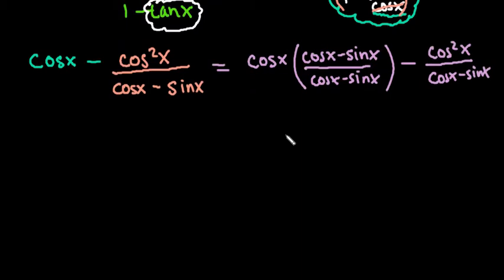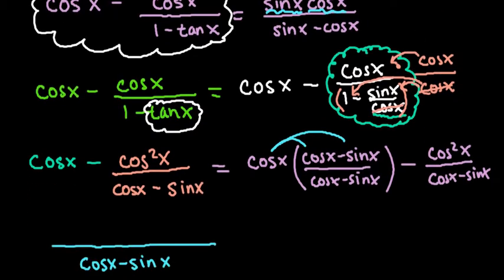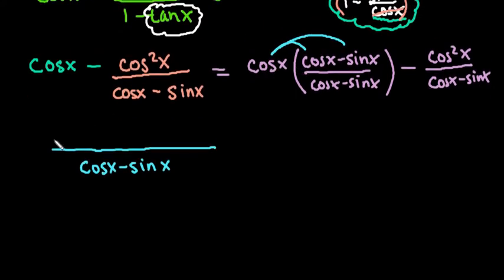So now what we are going to do is I'm going to just write this all as one fraction where I have cosine x minus sine x in the denominator. And so I'm going to distribute the cosine in. And I'm going to look back at my original problem because remember my goal is to get sine x times cosine x in the numerator. So when I multiply this in, it gives me positive cosine squared x minus sine x cosine x. And then remember I have this minus cosine squared x here.